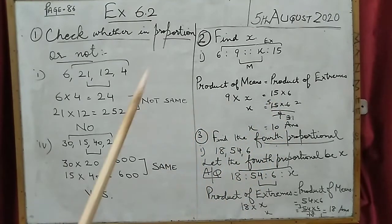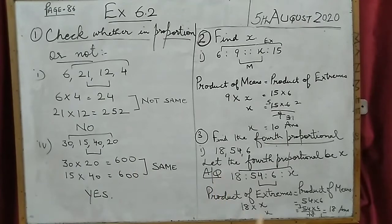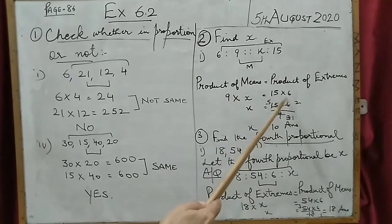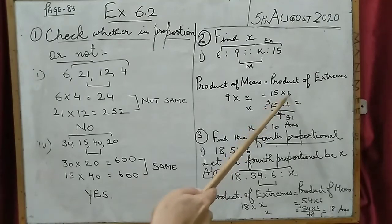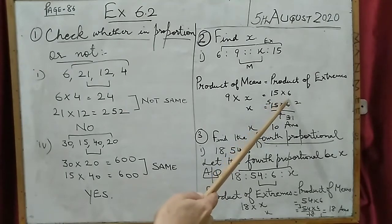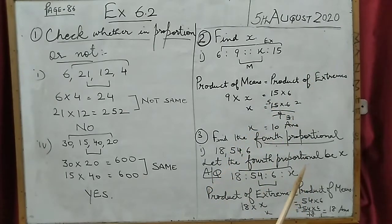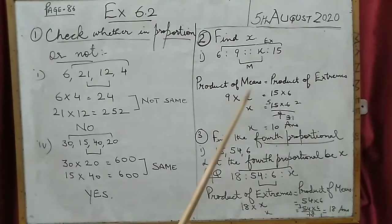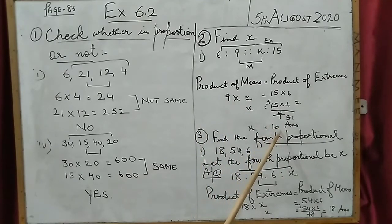Now let me show you a cross-check. 15 multiplied by 6 is 90. If we put x = 10 here: 9 multiplied by 10 is also 90. Both sides are equal, which means our answer is correct.